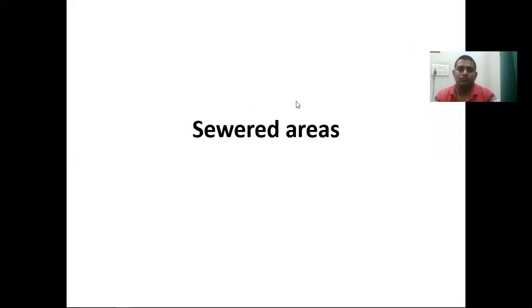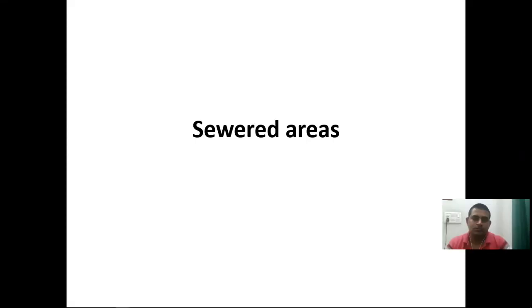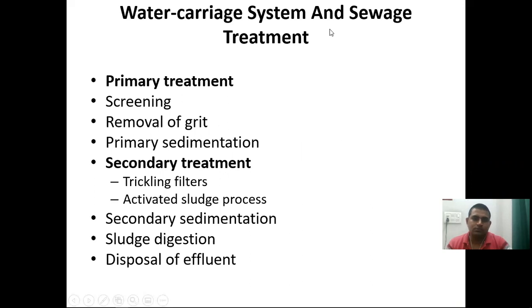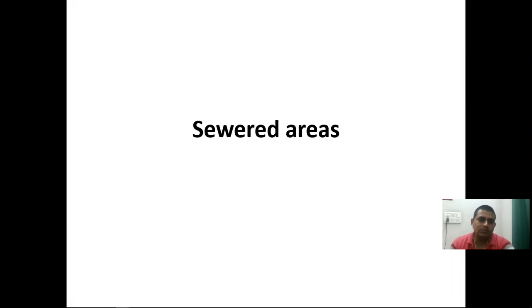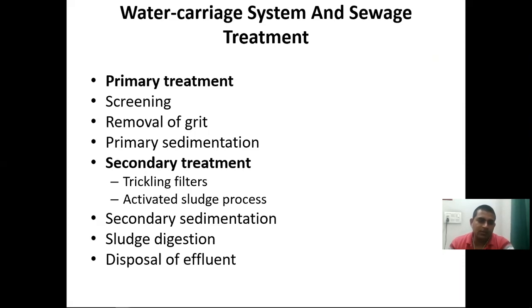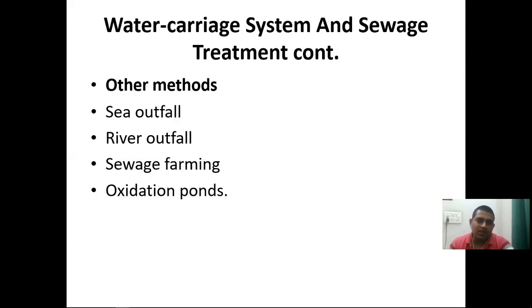Today we will discuss sewage areas, covering the water carrier system and sewage treatment: primary treatment including screening, removal of grit, and primary sedimentation; secondary treatment including trickling filters, activated sludge process, secondary sedimentation, sludge digestion, and disposal of effluent. Other methods include sea outfall, river outfall, sewage farming, and oxidation ponds.